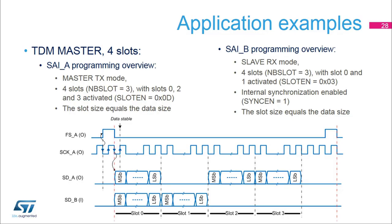Another example of full duplex mode use case with TDM protocol usage. Slot 1 is inactive or not used for sub-block A. Slots 2 and 3 are inactive for sub-block B. For both sub-blocks, the frame structure has four slots. Sub-block A will generate three samples per frame. Sub-block B will receive two samples per frame.